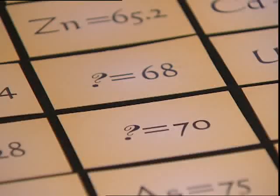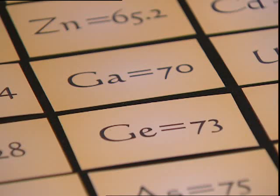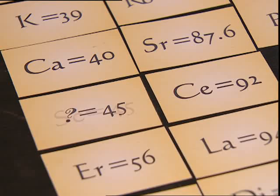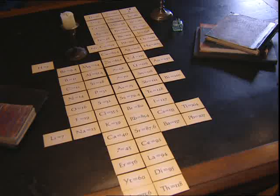Six years later, a new element called gallium was discovered. Its atomic weight was almost exactly the same as Mendeleev's prediction. This happened again with two other elements filling gaps. From then on, Mendeleev's table was accepted by scientists.